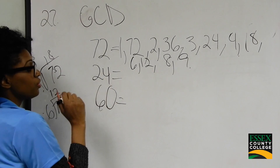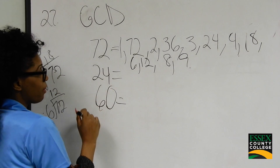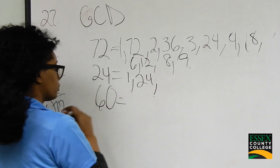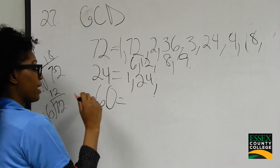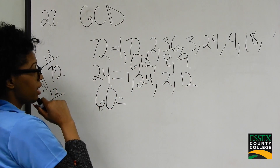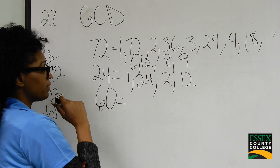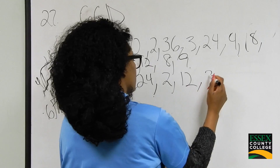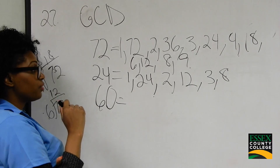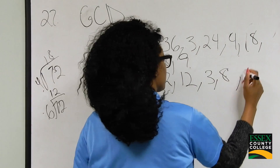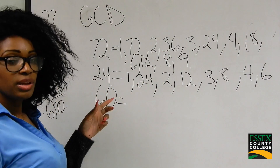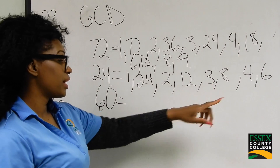Now we're going to do the same thing for 24. 24 divided by 1 is 24, so 1 and 24 are factors. 24 divided by 2 is 12, so 2 and 12 are factors of 24. Can 24 be divided by 3? Yes — 3 and 8 are factors of 24. Is 4 a factor of 24? Yes — 4 and 6 equal 24. Can 7 go into 24? No.